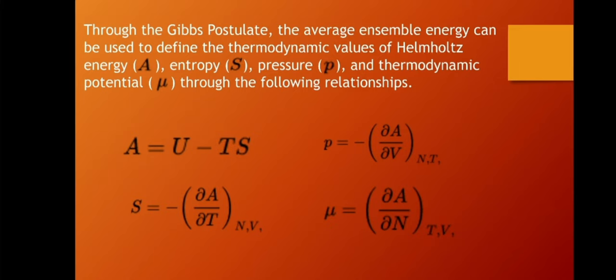N here is equal to the number of molecules and T is temperature. Entropy is equal to the negative change in Helmholtz's energy over change in temperature, where N is number of molecules and V is volume. While mu, or thermodynamic potential, is equal to the change in Helmholtz's energy over the change in number of molecules, at constant T (temperature) and V (volume).